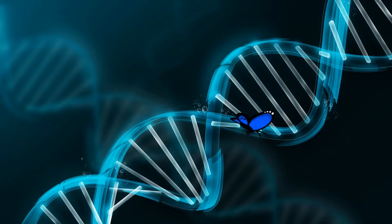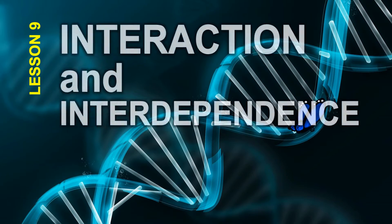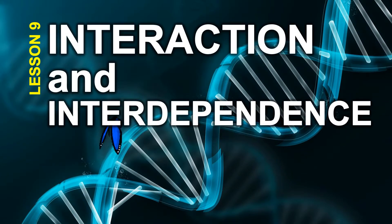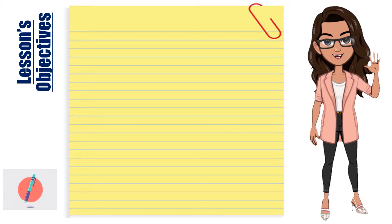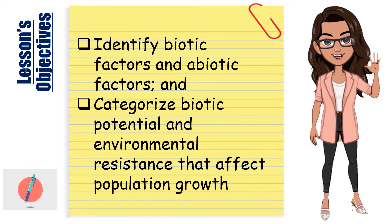My dear students, our lesson today is Lesson 9: Interaction and Interdependence. At the end of this module, you should be able to identify biotic factors and abiotic factors and categorize biotic potential and environmental resistance that affect population growth.